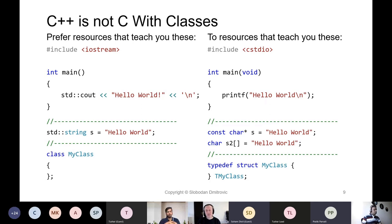Let's get this out of the way. C++ is definitely not C with classes. It started off as C with classes, but it's now a completely different language — it is important to make this distinction right away. When determining what a resource is teaching you, there is a left-hand side column and a right-hand side column. If you are reading a resource that teaches things in the left-hand side column, you are on a good path. The right-hand side column teaches things the old way, mixing C and C++.